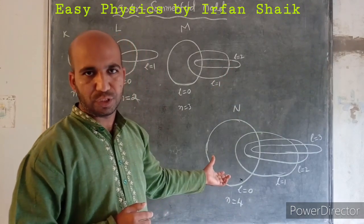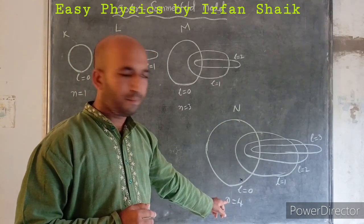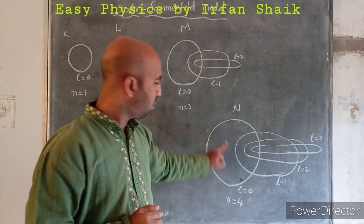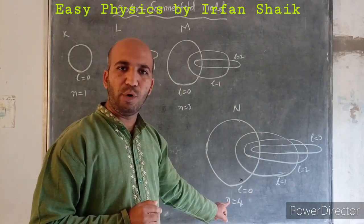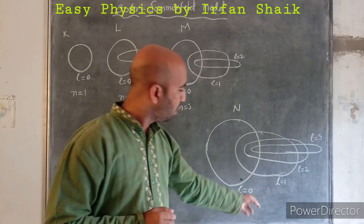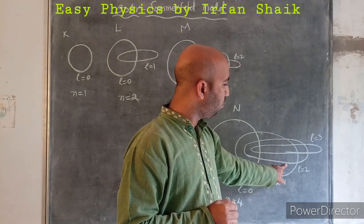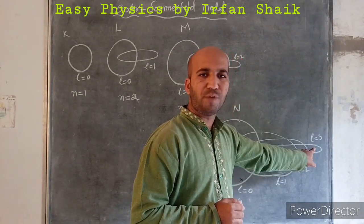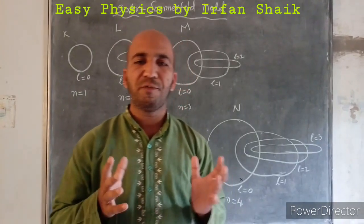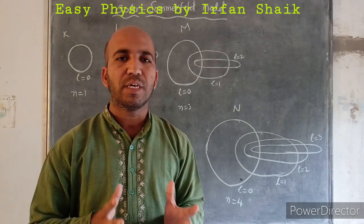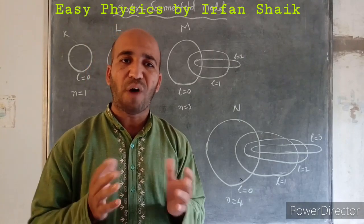For the fourth shell — the N shell (n=4) — the original orbit has l=0, and Sommerfeld added three elliptical orbits with values l=1, l=2, and l=3. By adding elliptical orbits, Sommerfeld tried to explain the reason for the splitting of the spectral lines of hydrogen atom.